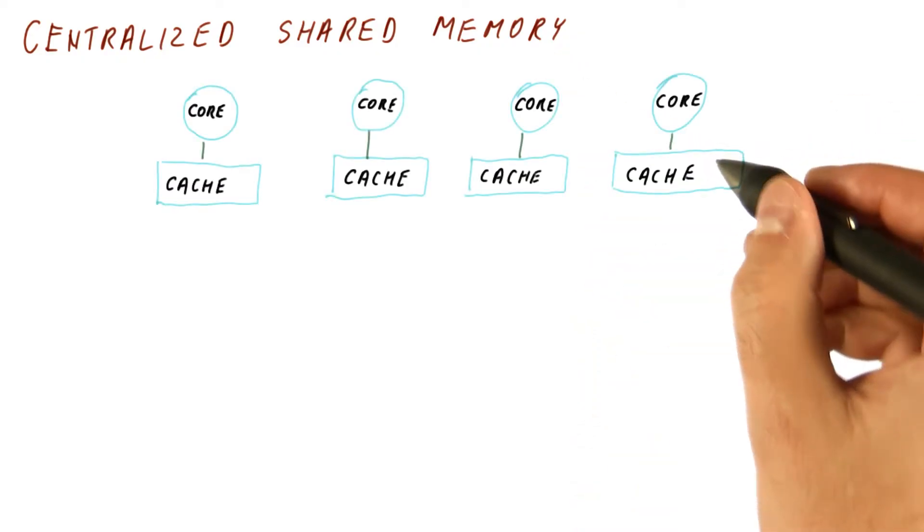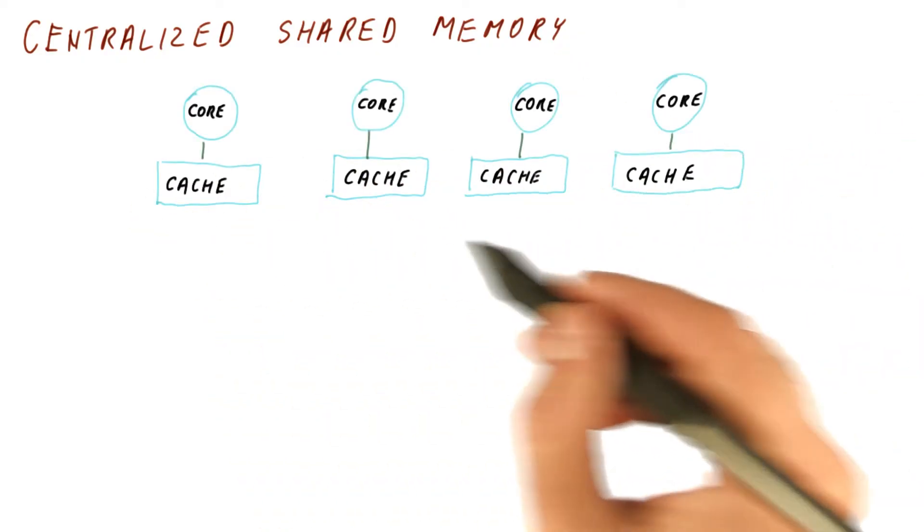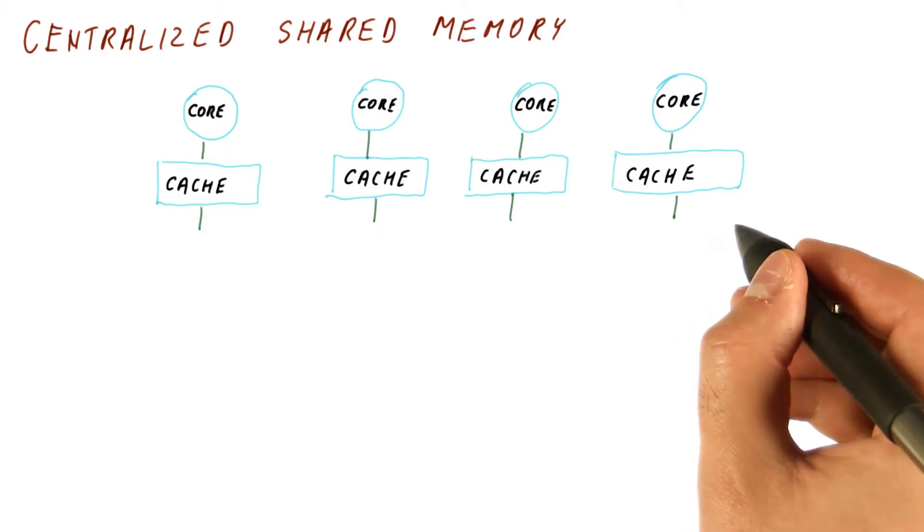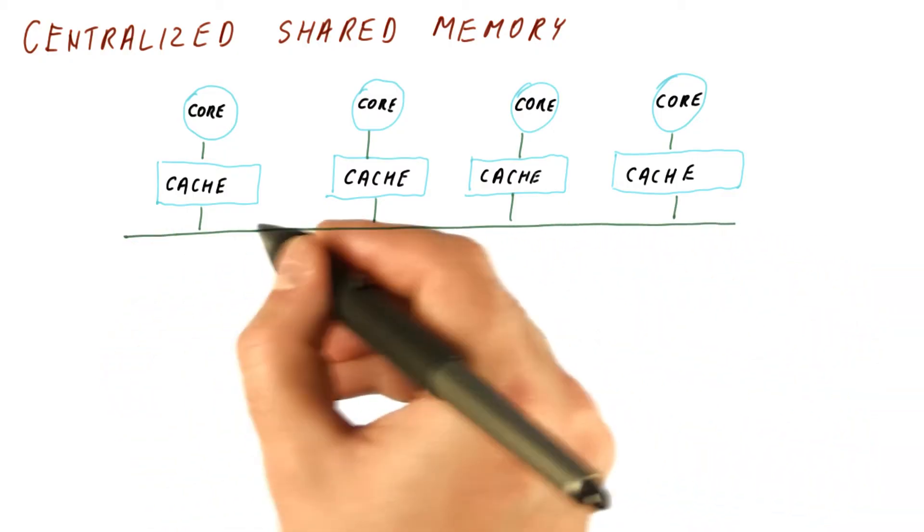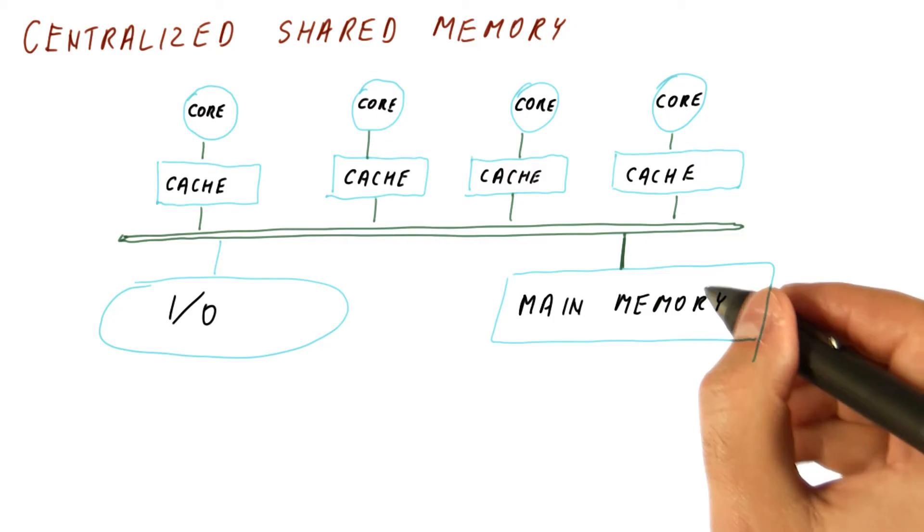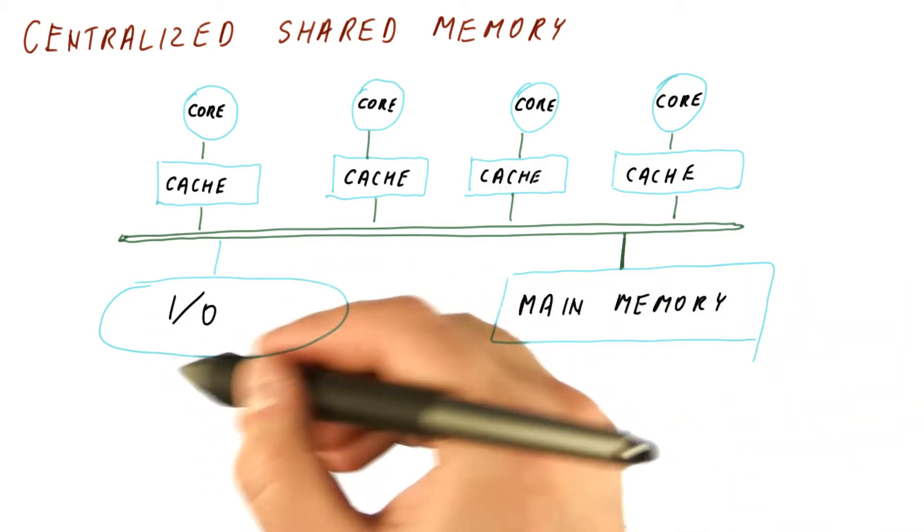So all the cores, let's say we have four of them, might have their own caches, but then they're all connected to the same bus, so they can all access the same main memory and input output devices.